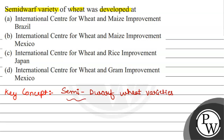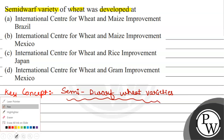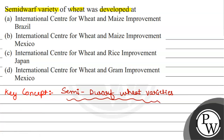So, semi-dwarf wheat varieties — when did they develop in India? They were developed in the years 1960s to 2000s.